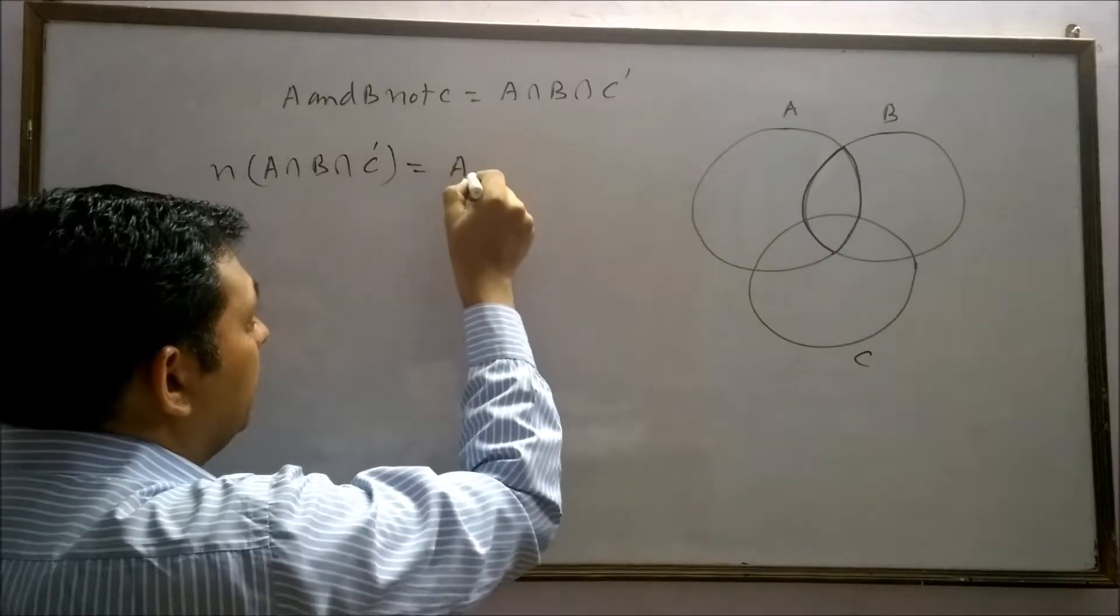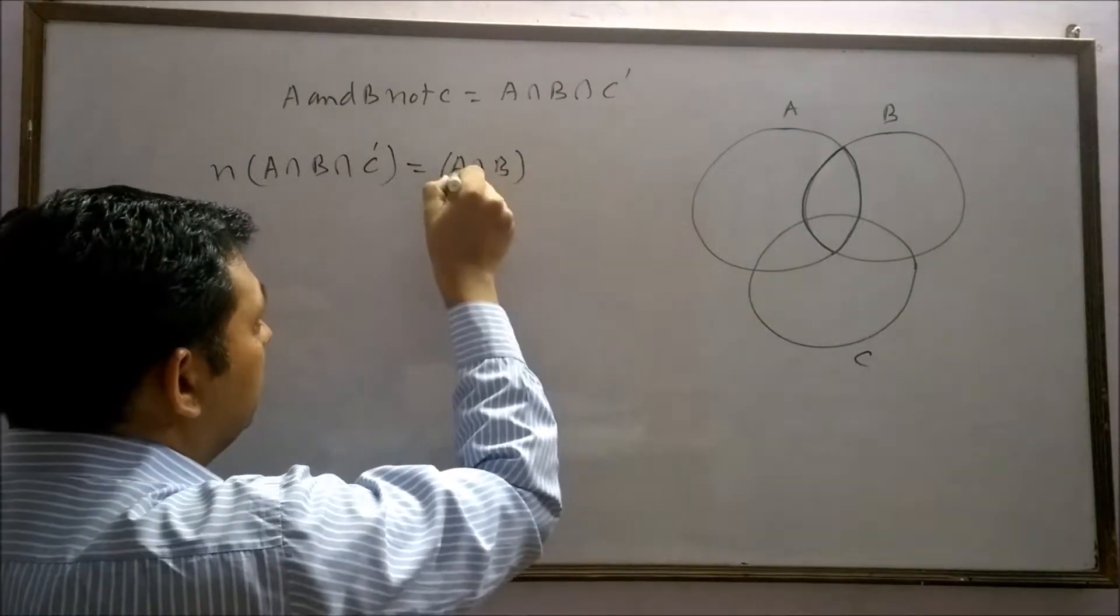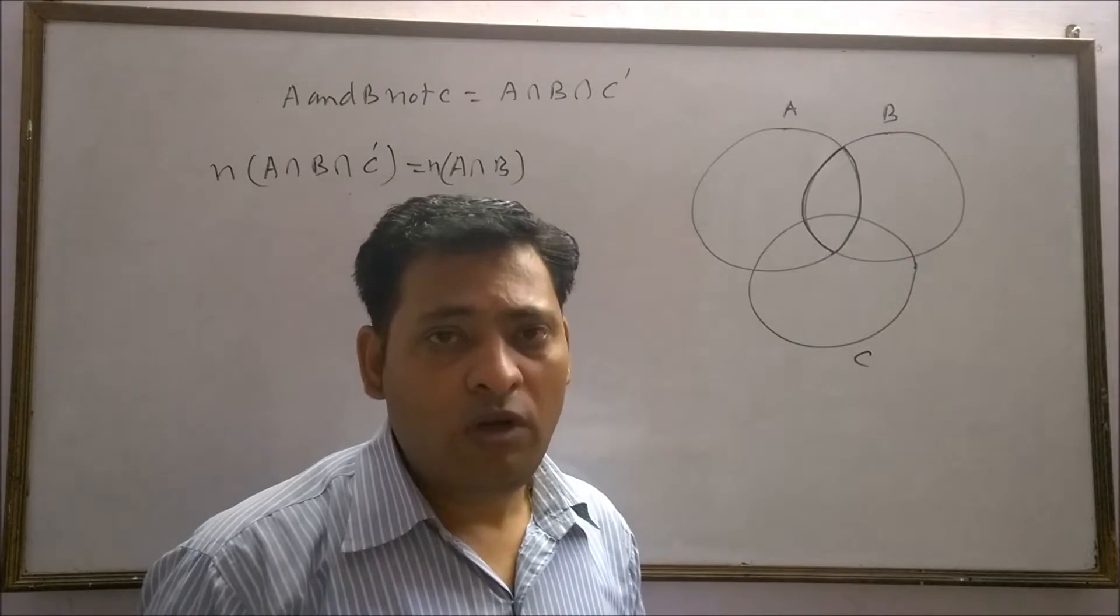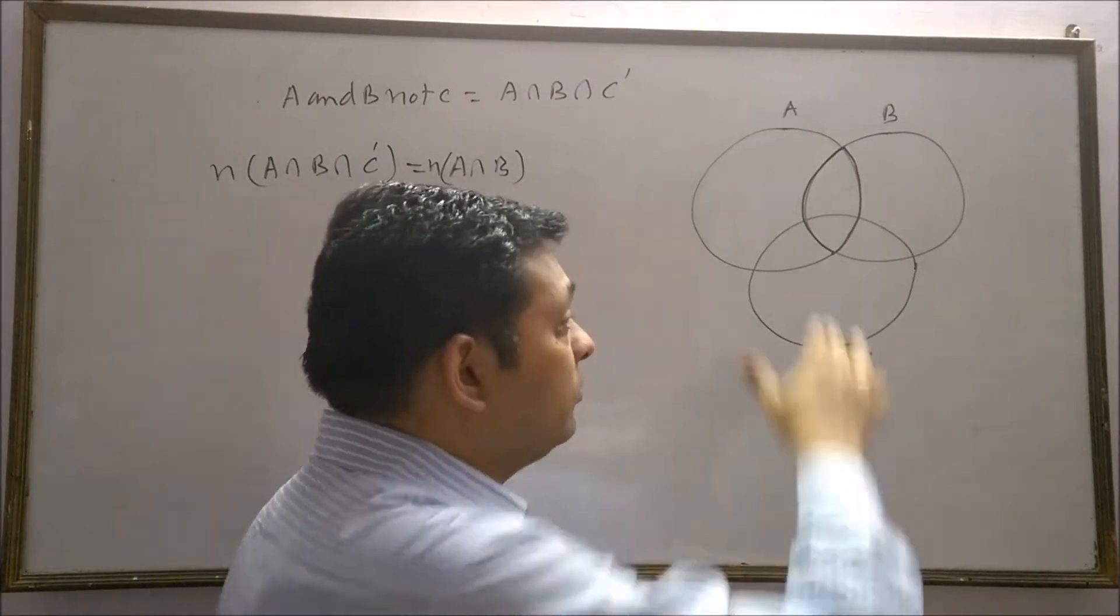So for A intersection B, what do we not want? Elements of C.